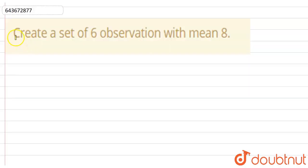Hello everyone, so the question given is create a set of six observations with mean 8. We have to create a set where number of observations is equal to 6 and mean is equal to 8.